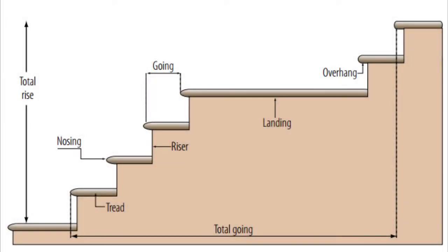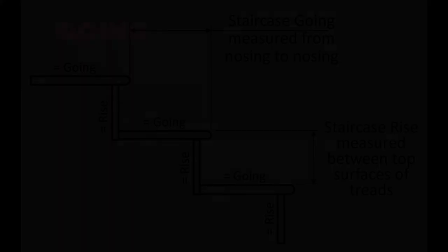Nosing. It is a projecting part of the tread beyond the face of the riser. Nosing is usually rounded to give a good aesthetic feel to the tread and makes the staircase convenient and easy to use.